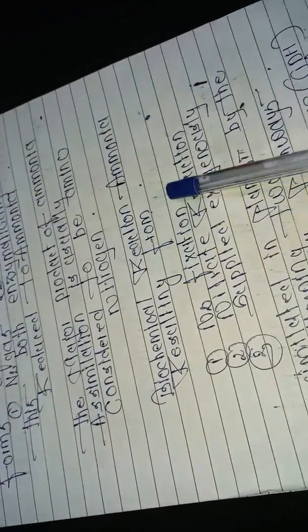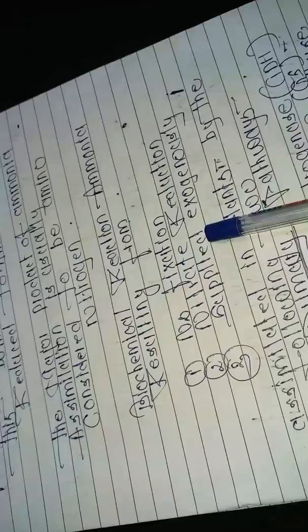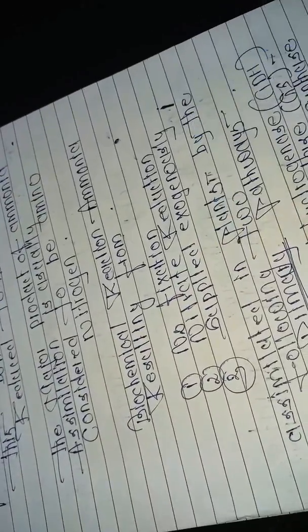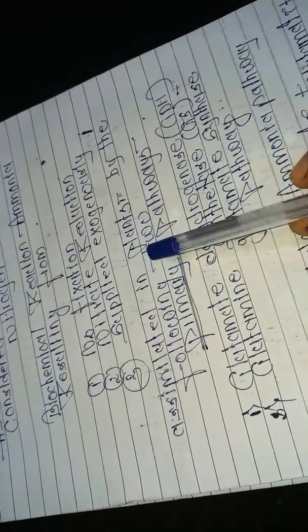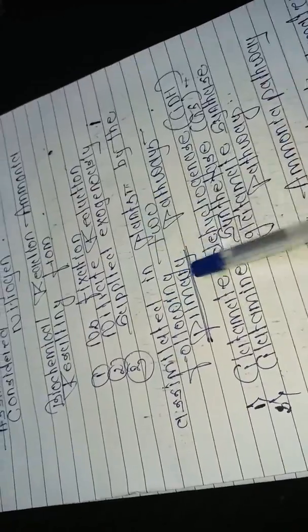The reaction of ammonia resulting from nitrogen fixation, nitrite reduction, or supplied exogenously is assimilated in plants by the following two primary pathways.